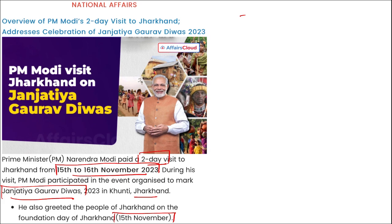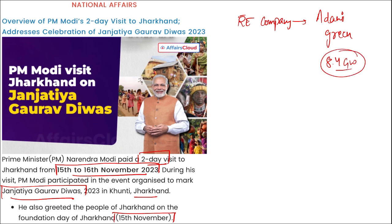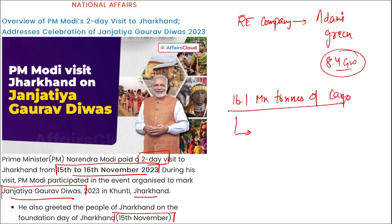Which company became India's largest renewable energy company? It is Adani Green, which has crossed the mark of 8.4 gigawatts, becoming India's largest renewable energy company. Then, Mundra Port became India's first port to handle 16.1 million tons of cargo.